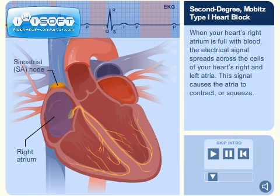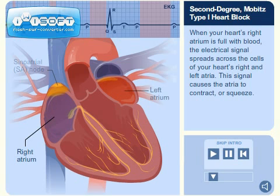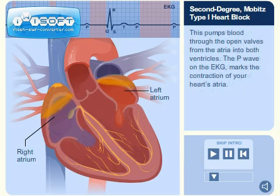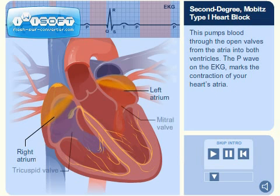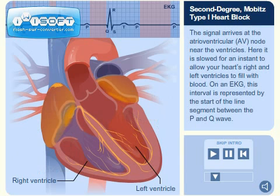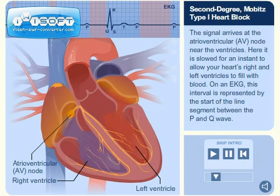When your heart's right atrium is full with blood, the electrical signal spreads across the cells of your heart's right and left atria. This signal causes the atria to contract, or squeeze. This pumps blood through the open valves from the atria into both ventricles. The P wave on the EKG marks the contraction of your heart's atria. The signal arrives at the atrioventricular, or AV node, near the ventricles.